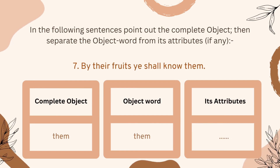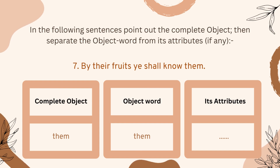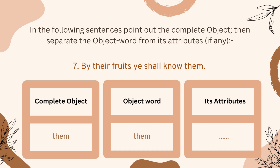Number seven: 'By their fruits ye shall know them.' We have only one word as the complete object — 'them' — and this is the object word as well. We don't have any attributes for this sentence, so this one word is used as the object.